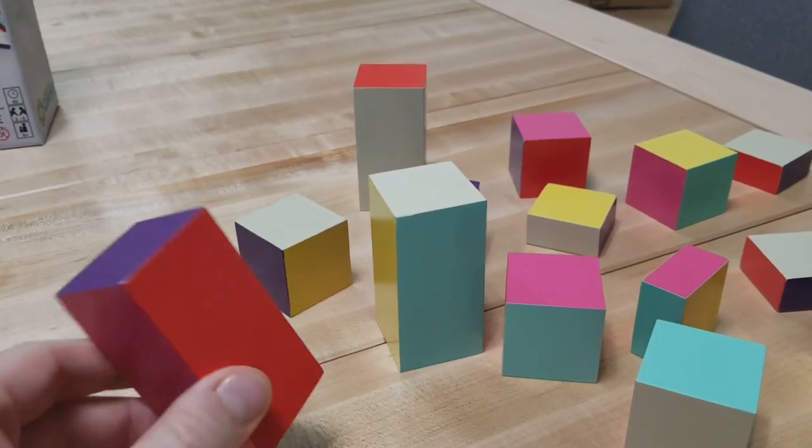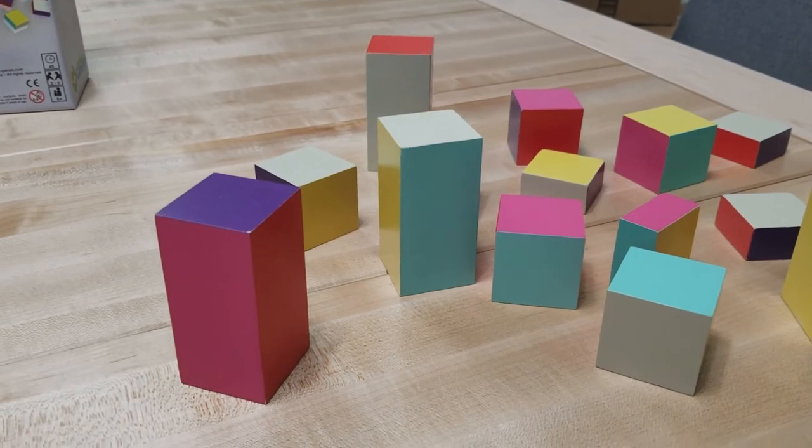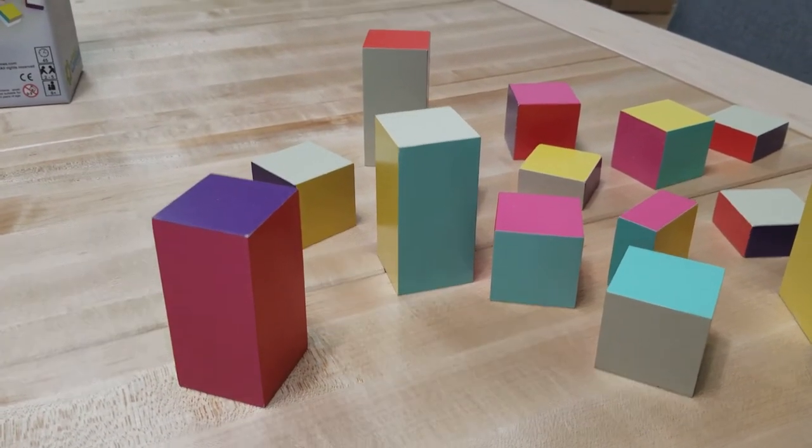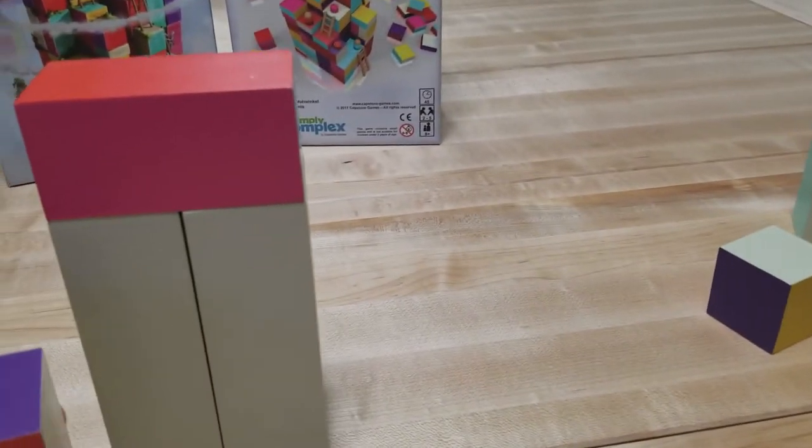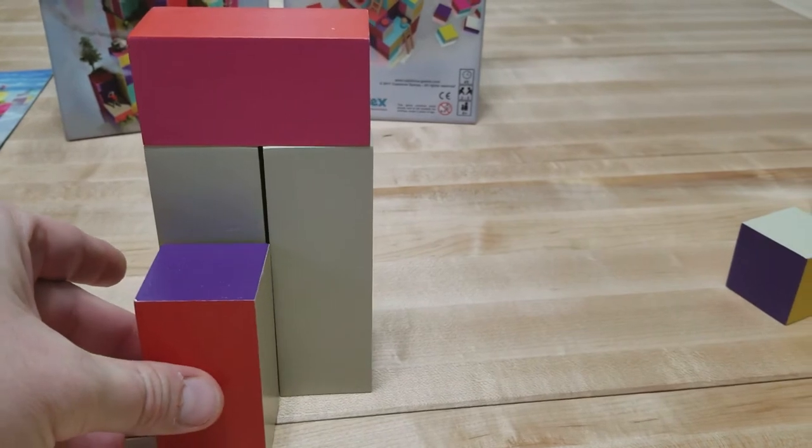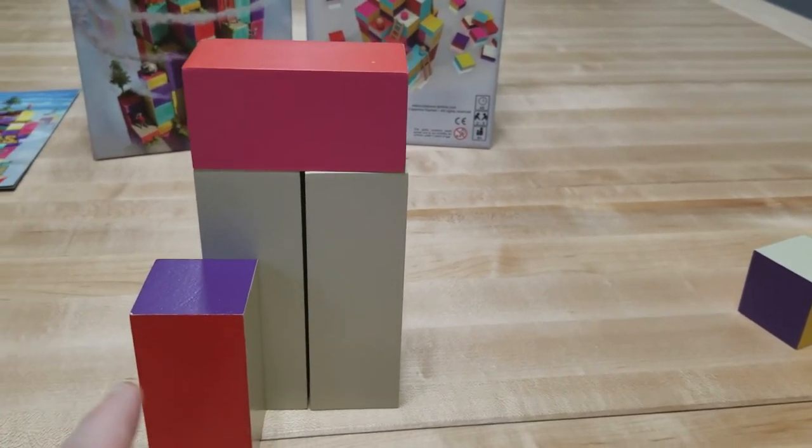The other important placement rule is that a block, one of the sides, has to at least partially touch the side of a piece already in play. You could never do a completely diagonal placement. So this block would have to at least partially touch the side of a block in play and that would be legal.